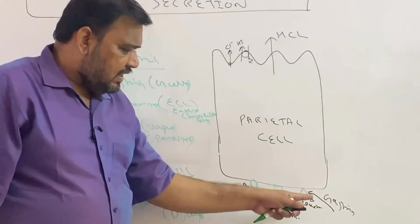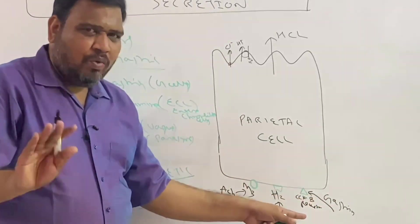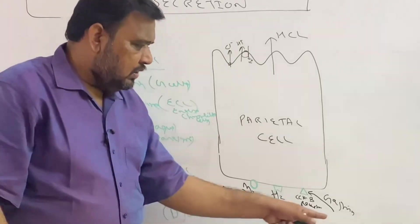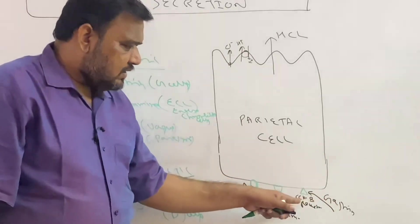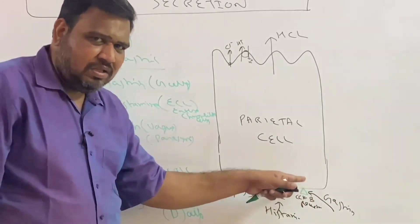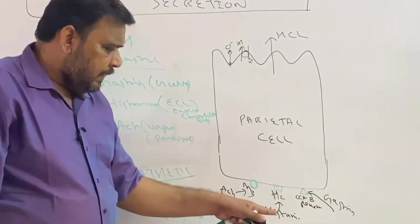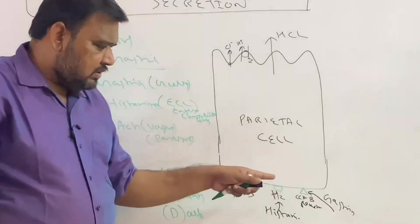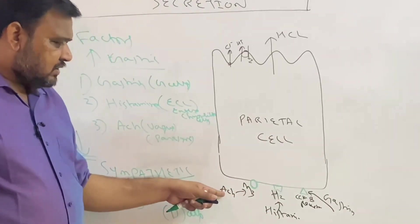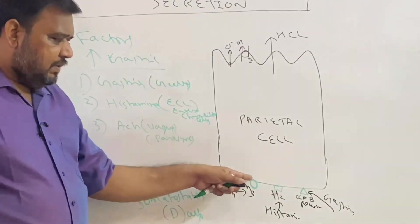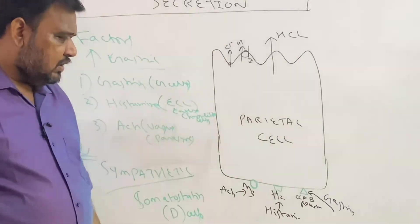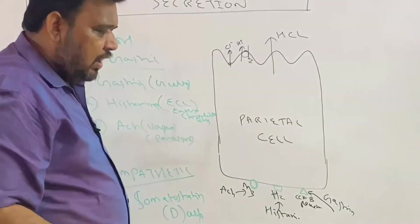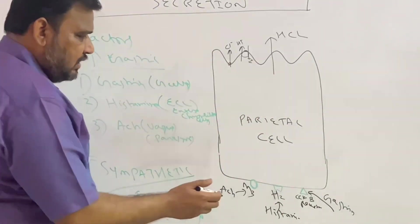Gastrin acts on CCKB receptors present on the parietal cell. Histamine acts on H2 receptors present on the parietal cell. Acetylcholine acts on M3 receptors present on the parietal cell. Now let us look at how each of these acts on the parietal cell to increase acid secretion.